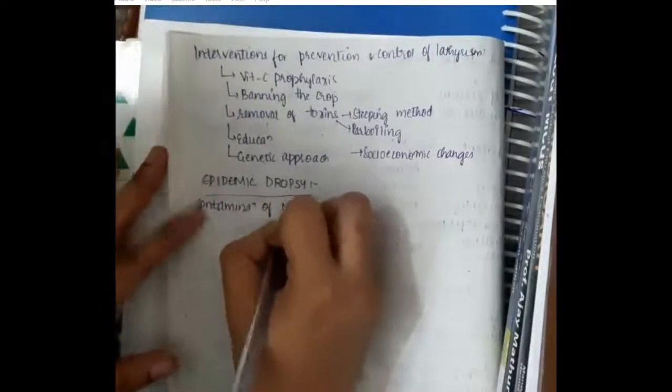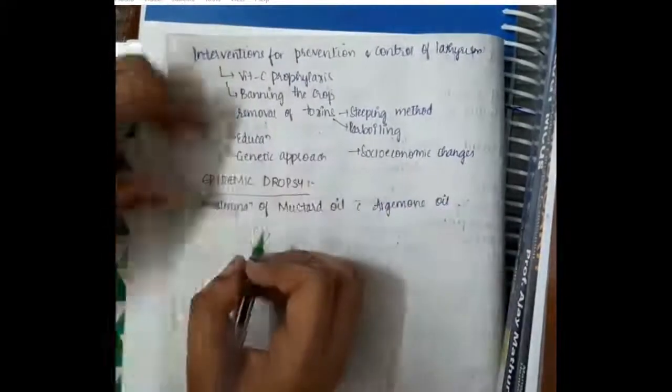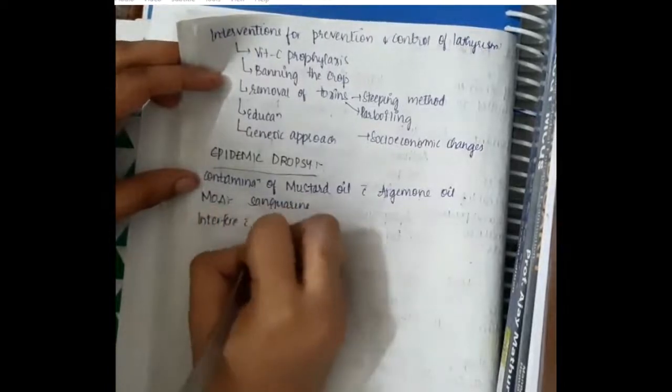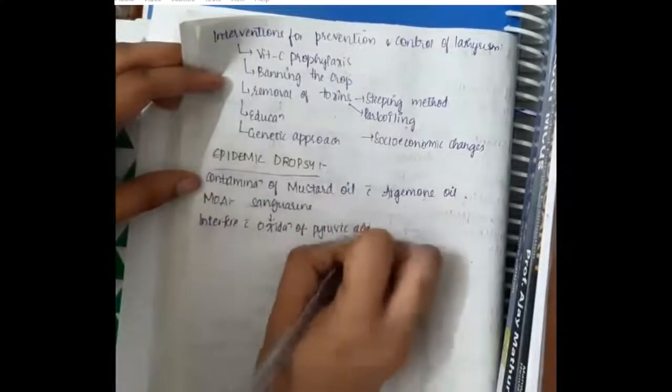Epidemic dropsy. Next adulterant: Epidemic dropsy occurs due to the contamination of mustard oil with argemone oil. It occurs due to the toxin sanguinarine. This sanguinarine will interfere with oxidation of pyruvic acid.